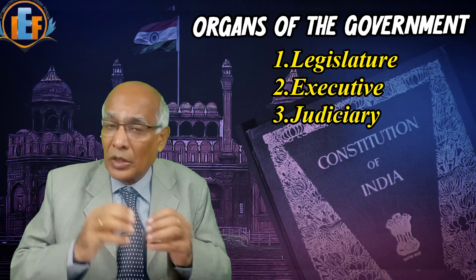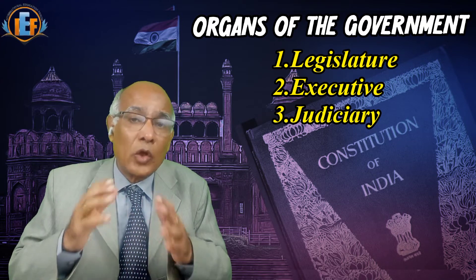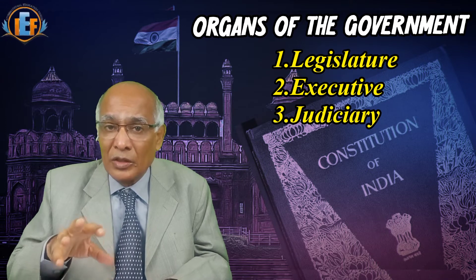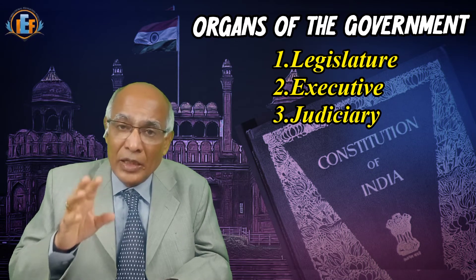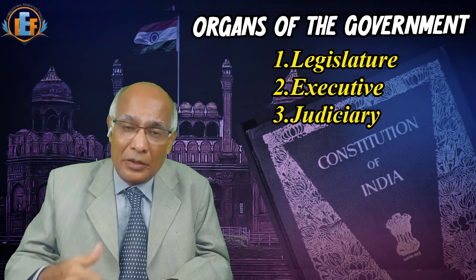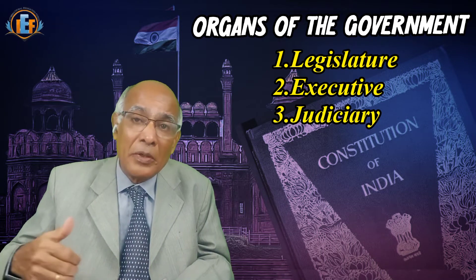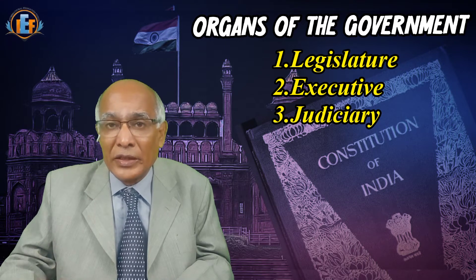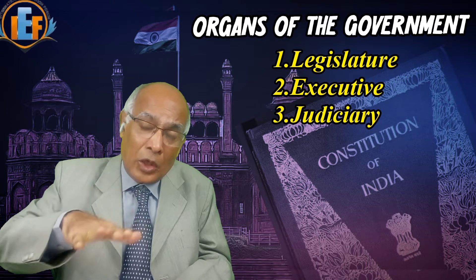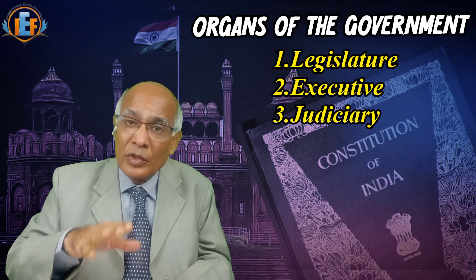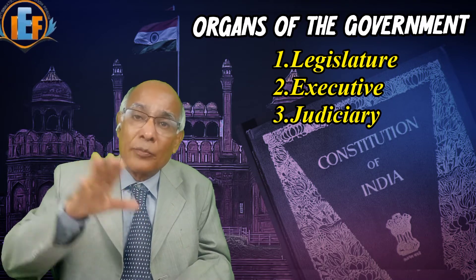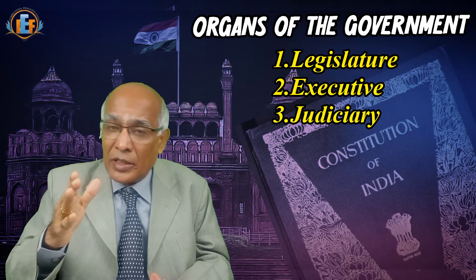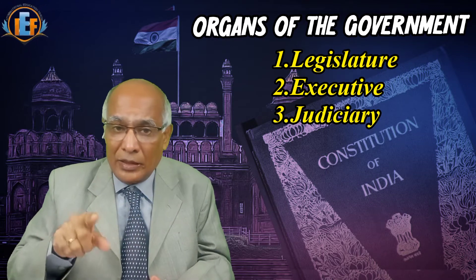The legislature meets at the state level — the assembly and the council — and at the central level, the parliament as a whole. The Lok Sabha and the Rajya Sabha have legislative functions, meaning they represent the feelings and opinions of the people. Members of Parliament are elected directly by the people for the Lok Sabha, and indirectly for the Rajya Sabha. Because they are elected, they come to the legislature reflecting the opinions of the people.